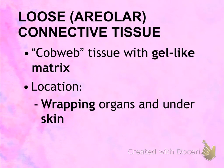The location of loose connective tissue would be any type of organ — they have a thin, clear kind of covering around them, and that's loose connective tissue. It is also the type of connective tissue found under the skin and under the epithelium.